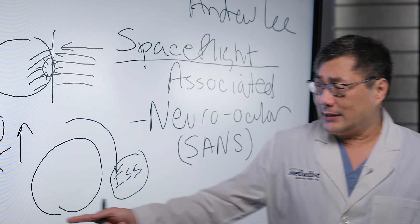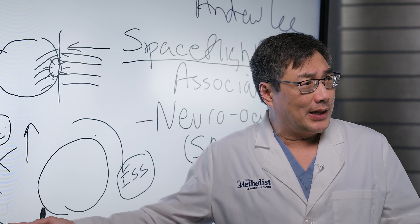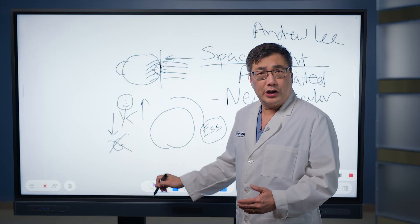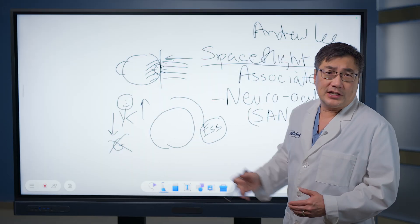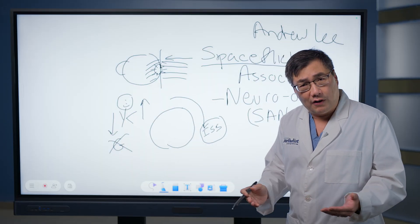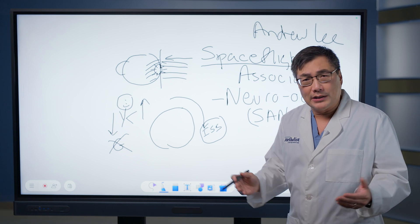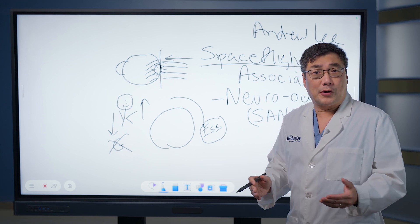The treatment, of course, is to come back to the gravitational field of the planet. Once they come home, the fluid goes back down, and the signs and symptoms of SANS resolve normally over several months to a year with no permanent damage.